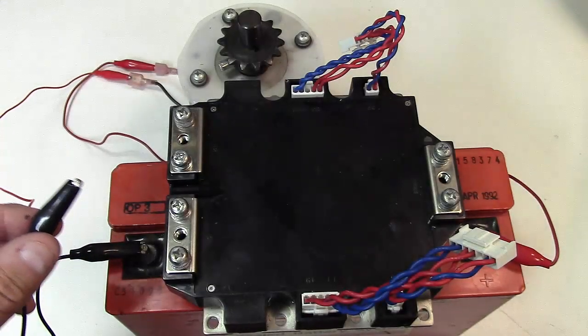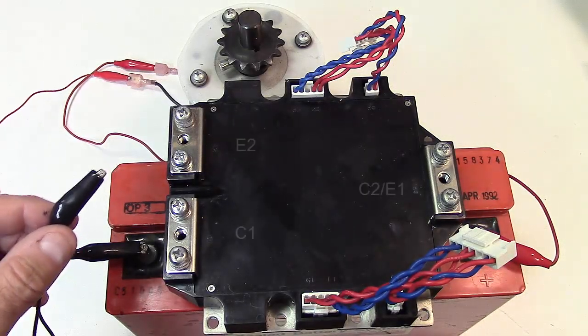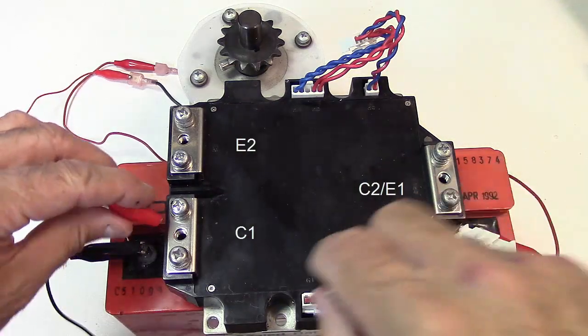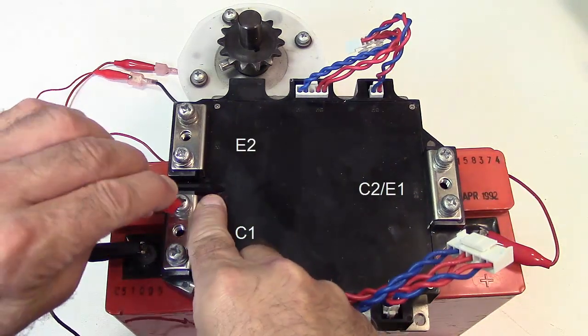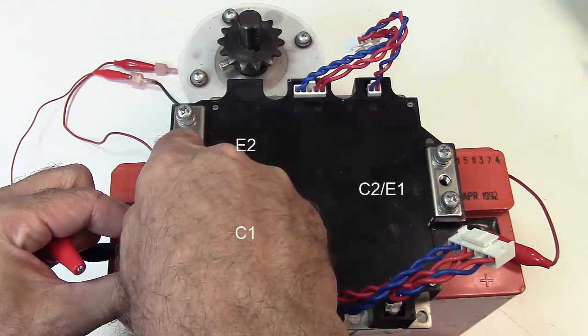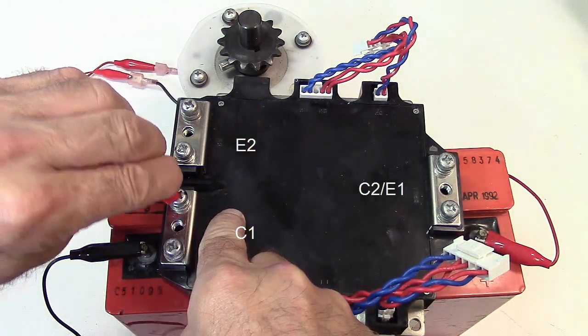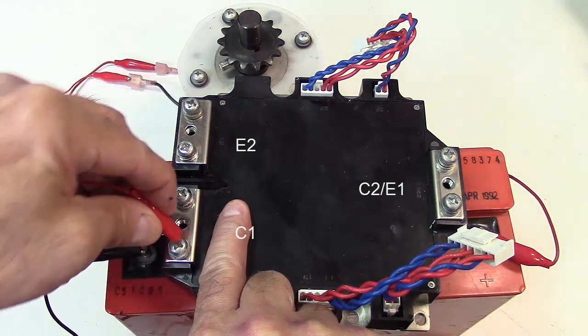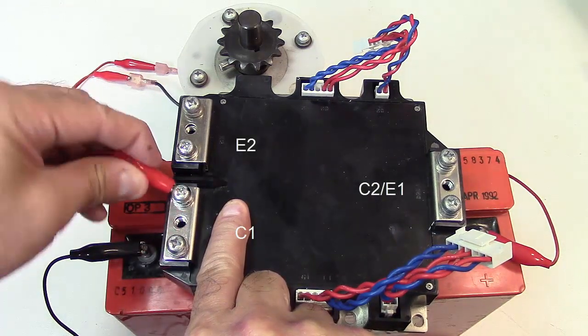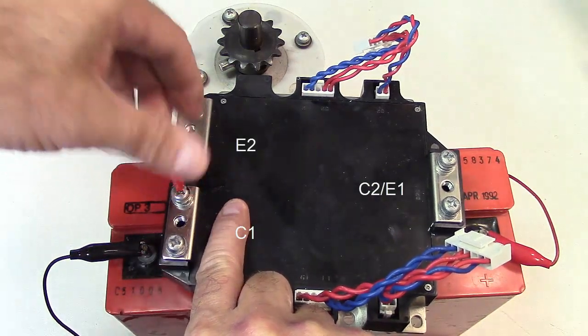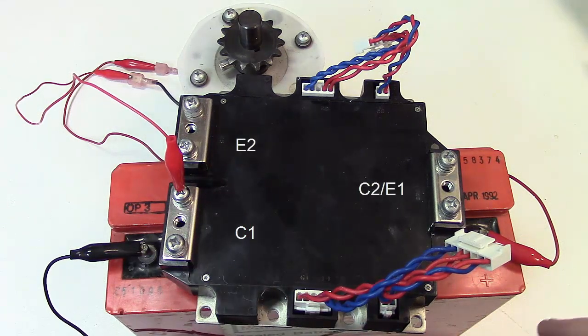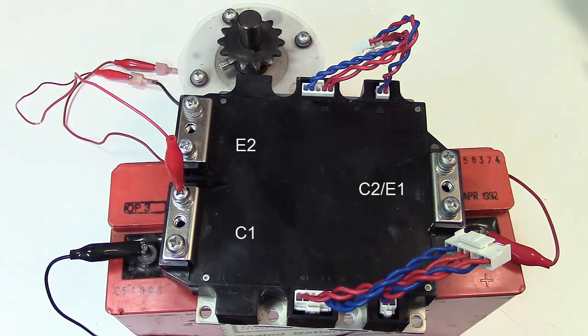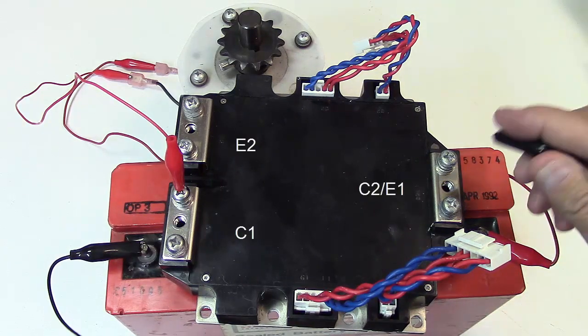Alright, on this particular module here, C1 is right here. So this is actually C1 and this screw is loose, I'm going to tighten that up. So this is C1, this is our collector of the top IGBT. So we're going to hook that up in series with our motor. And E1 is over here, on this side.